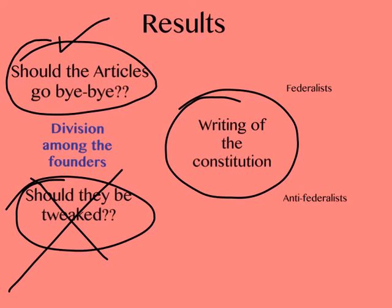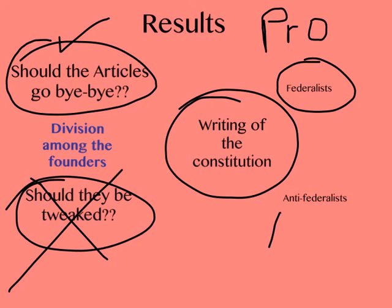Once the Constitution was written, the states had to come together and ratify — or approve — the new governing document. At this point you get the development of the start of political parties. The Federalists were pro-ratification and the Anti-Federalists were against it, saying this is no good, we don't want to do this. If you want more details about that debate, I invite you to visit my lesson on the Federalists and Anti-Federalists.